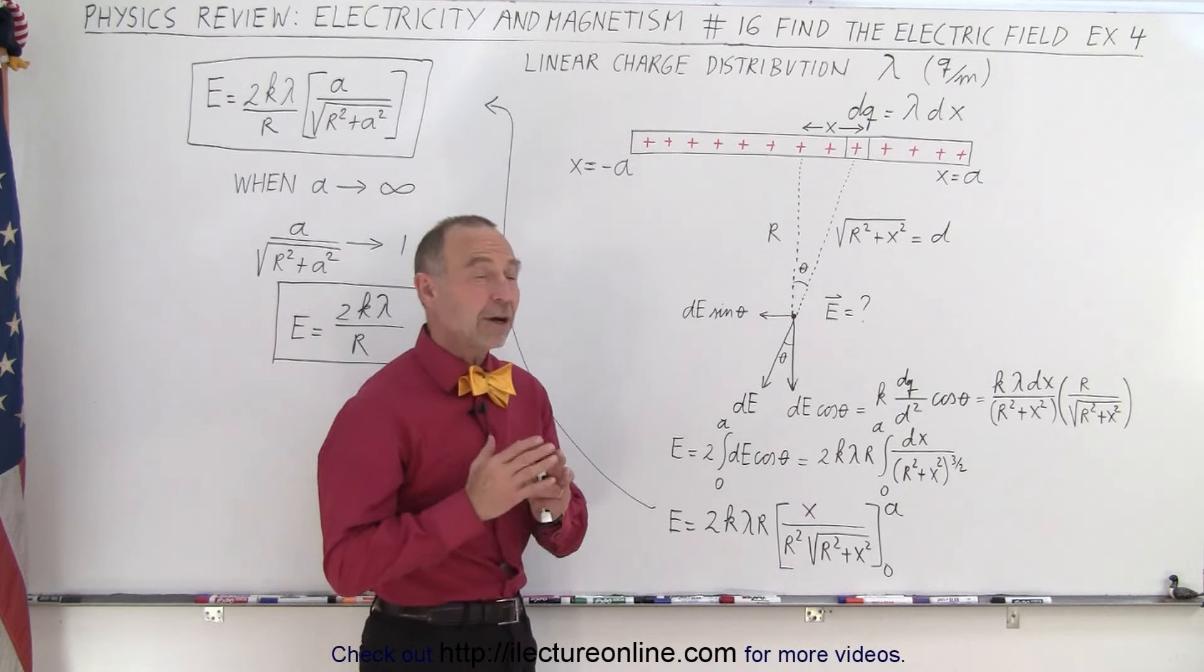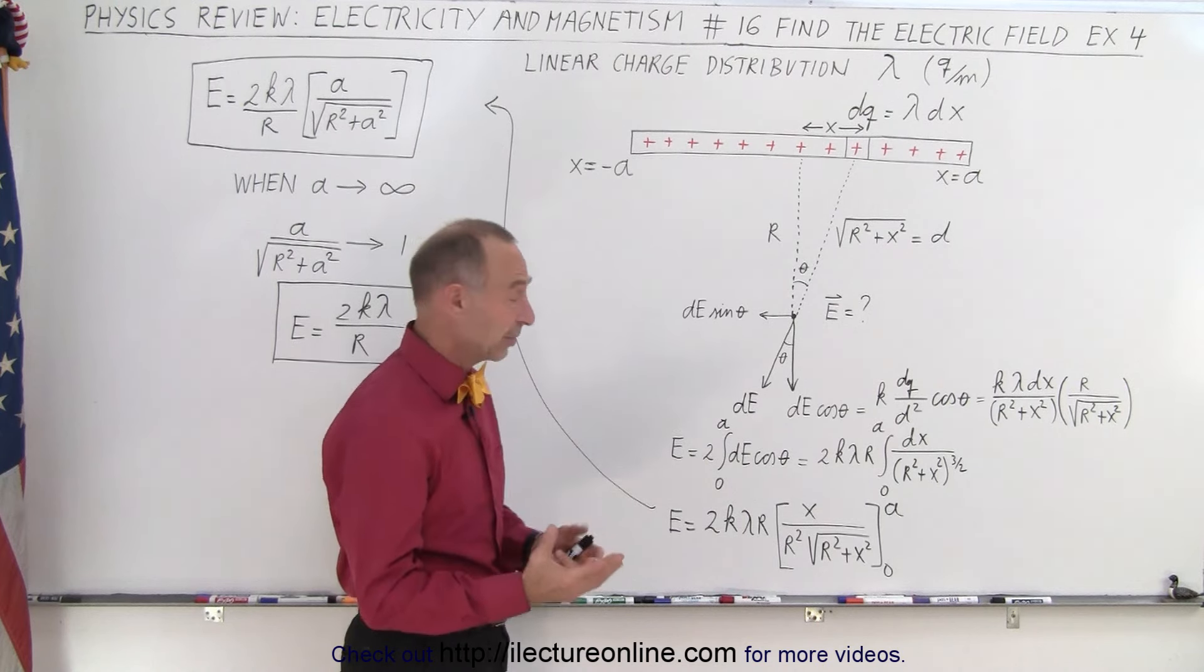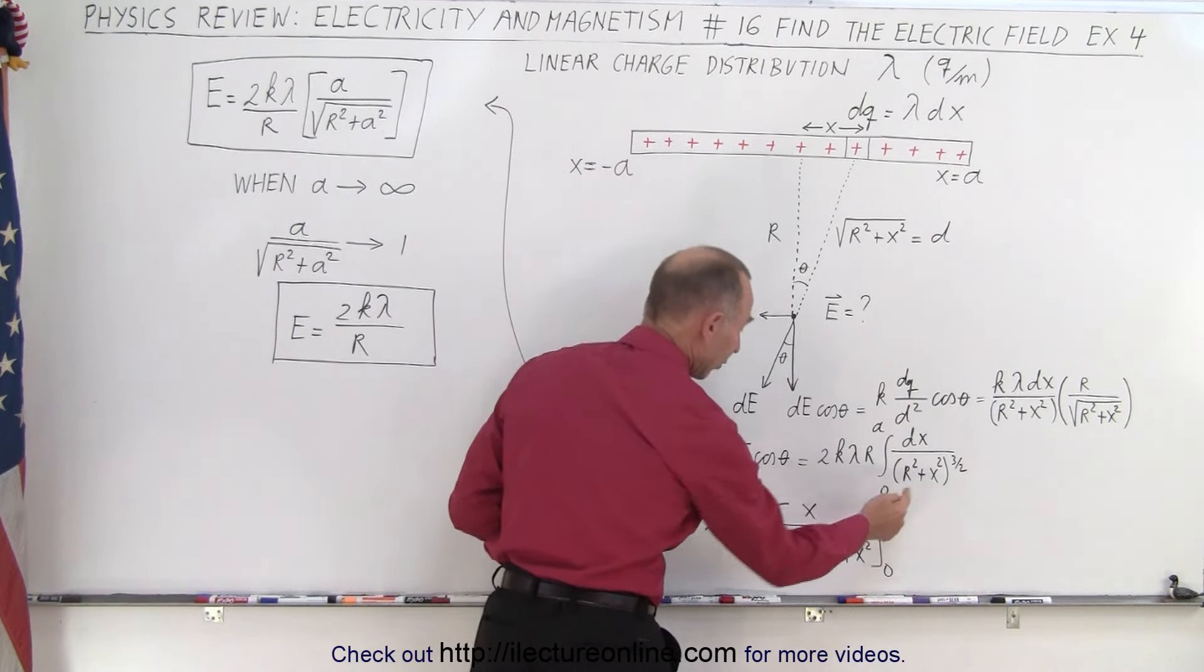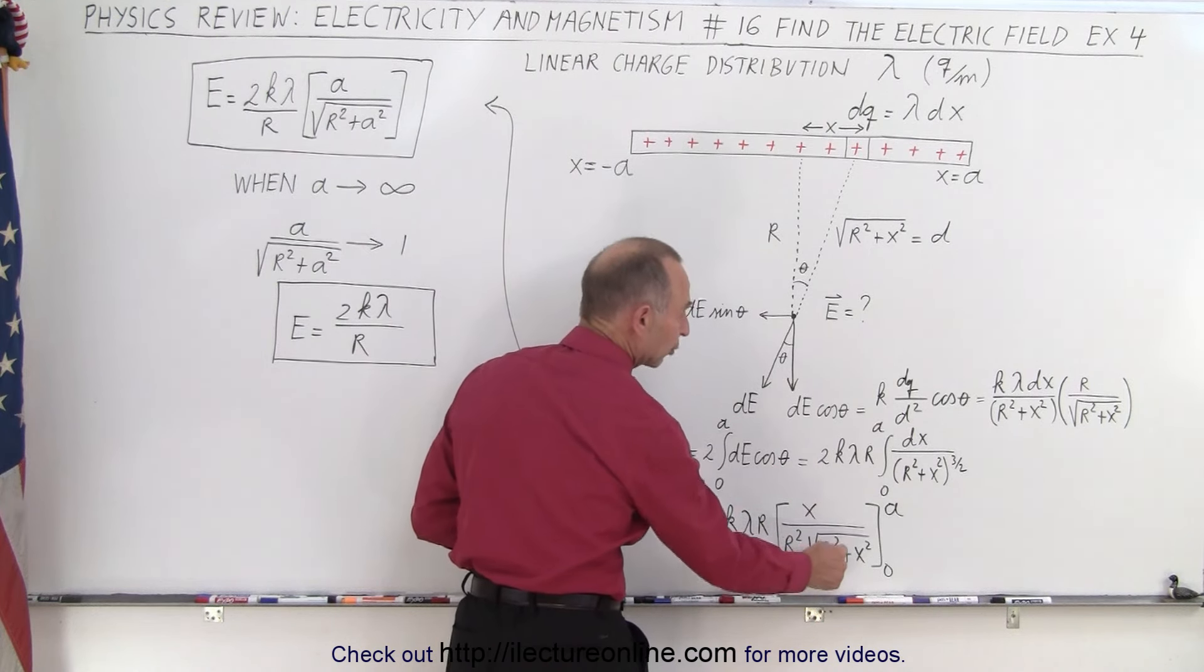Now this is a very common integral in electromagnetism. Probably it's a good idea to simply memorize it. So the integral of this is going to be x divided by r squared times the square root of r squared plus x squared.